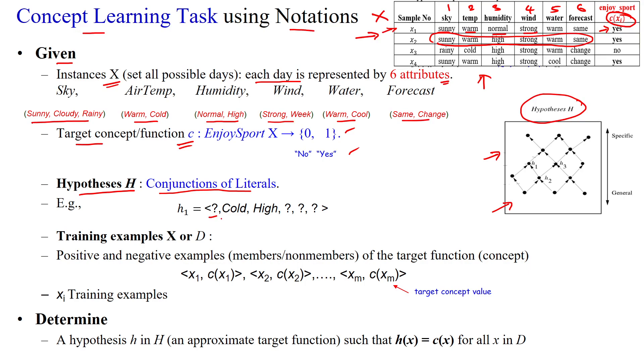Here for example, H1 is having the first attribute as question symbol. It will accept any value that may be sunny or cloudy or rainy. Then second attribute temperature is accepting only cold. Then third attribute is accepting only the value humidity. And the fourth, fifth, sixth attributes are accepting any value. This is general constraint in the hypothesis.